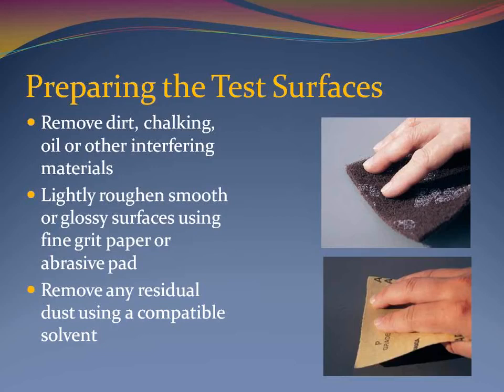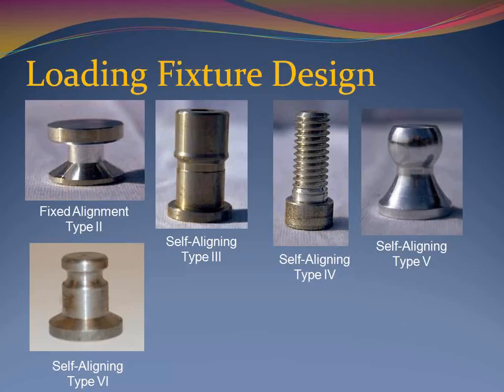If the test surface is very smooth or glossy, you may elect to lightly roughen it using fine-grit sandpaper. If you abrade the surface, be sure to wipe away any fine dust using a solvent that will not affect the coating. There is no standard design for loading fixtures, or dollies as they are sometimes called. The loading fixtures are designed to be compatible with the test device. The loading fixtures for the Type 2, Type 4, and Type 5 are aluminum and are generally used once then discarded. The Type 3 loading fixture is stainless steel and the Type 6 fixture is carbon steel — these fixtures can be cleaned and reused.